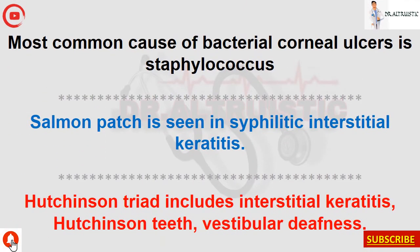Most common cause of bacterial corneal ulcers is Staphylococcus. Salmon patch is seen in syphilitic interstitial keratitis. Hutchinson triad includes interstitial keratitis, Hutchinson teeth, and vestibular deafness.